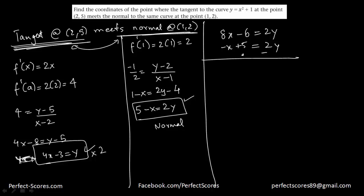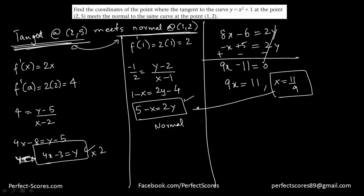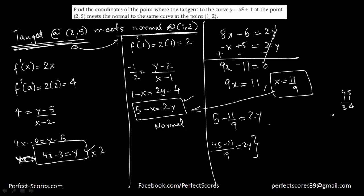To find where these two lines meet, I multiply the tangent equation by 2: 8x minus 6 equals 2y, and the normal gives 2y equals 5 minus x. Subtracting: 8x plus x minus 6 minus 5 equals 0, so 9x equals 11, meaning x equals 11 over 9. Substituting into 2y equals 5 minus 11/9: 2y equals (45 minus 11) over 9 equals 34 over 9, so y equals 17 over 9. The coordinates of the intersection point are (11/9, 17/9).